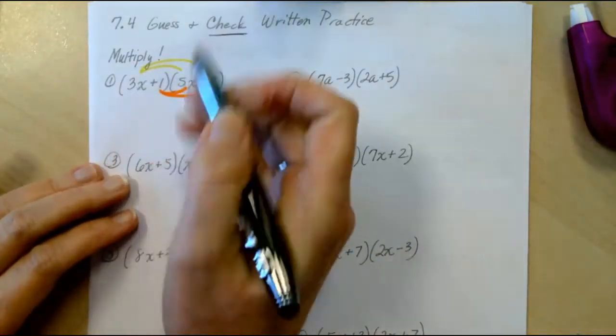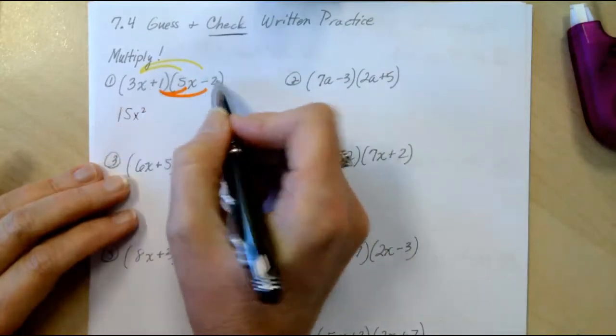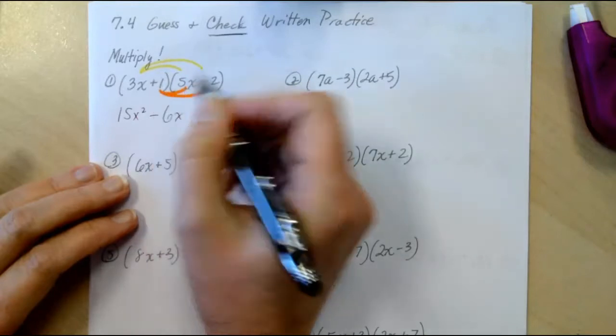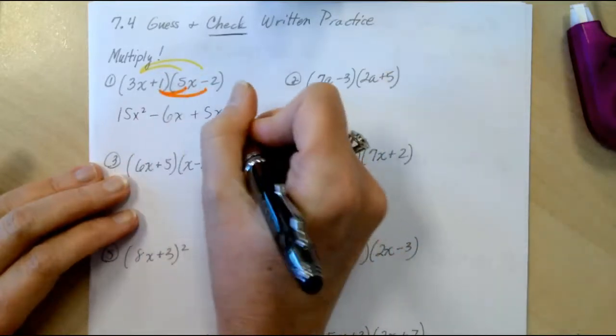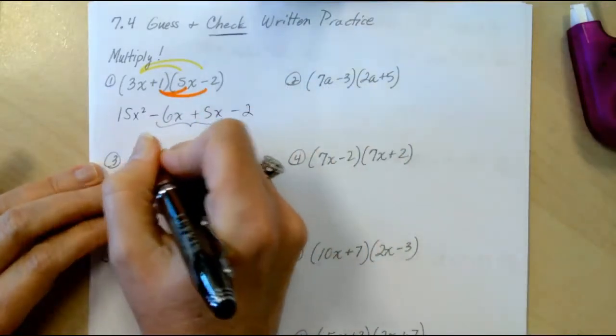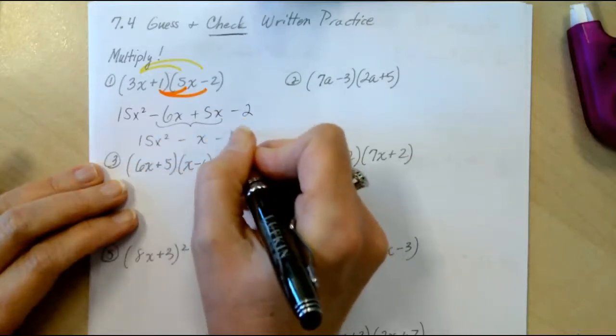So 3x times 5x is 15x squared, 3x times negative 2 is negative 6x, 1 times 5x is plus 5x, 1 times negative 2 is negative 2. Combine those like terms in the middle, and we get 15x squared minus x minus 2.